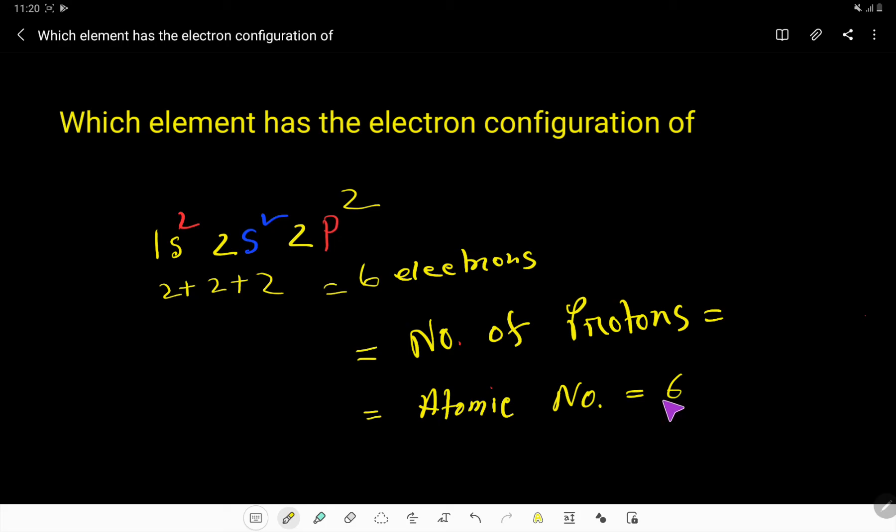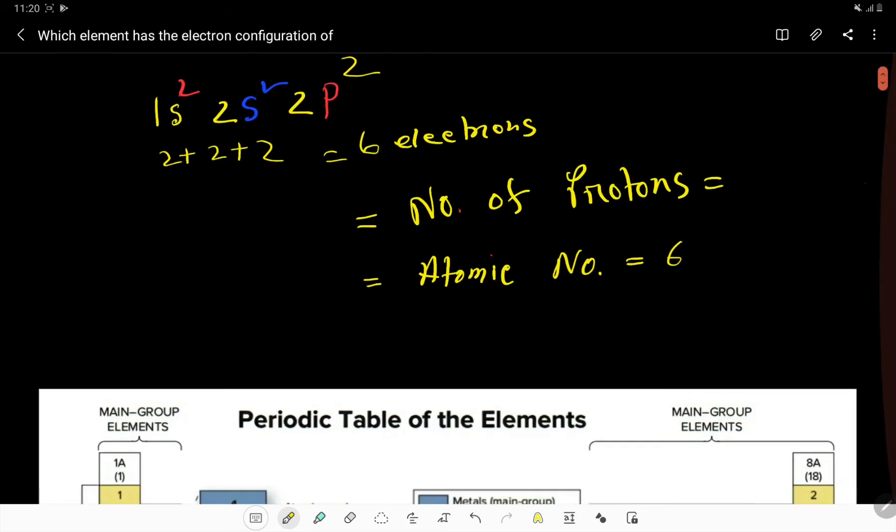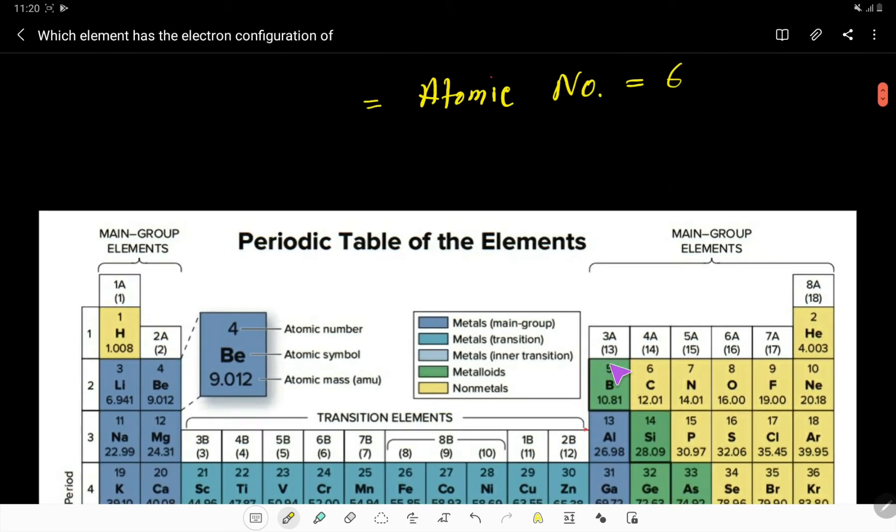Now we have to find out the name of the element whose atomic number is six from the periodic table. So let us open the periodic table and look at here - here carbon's atomic number is six.